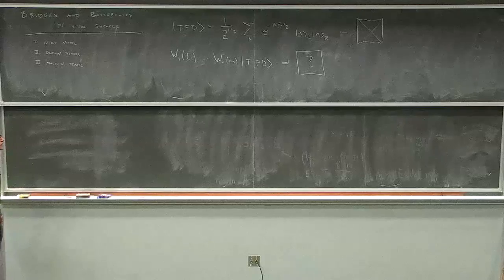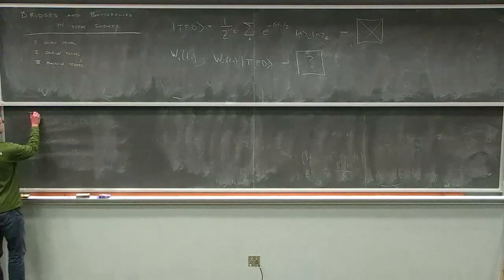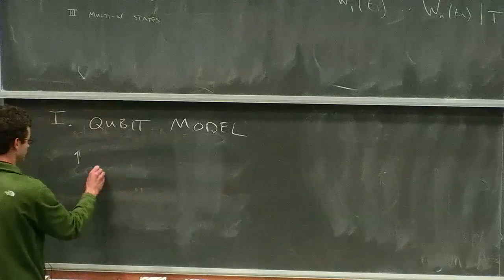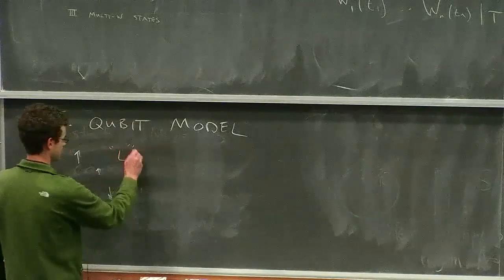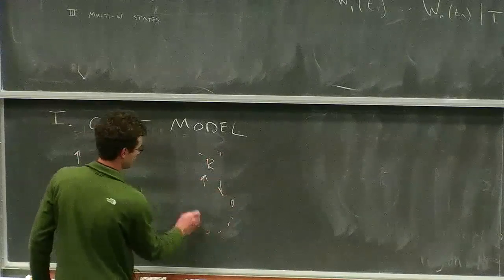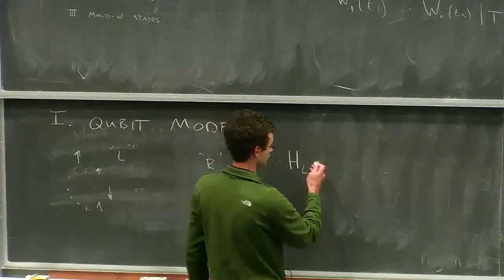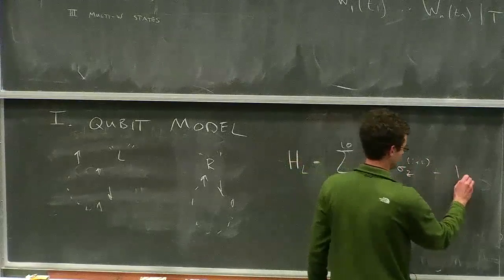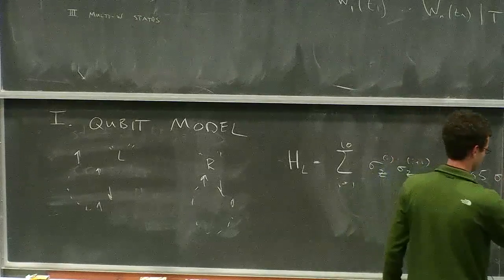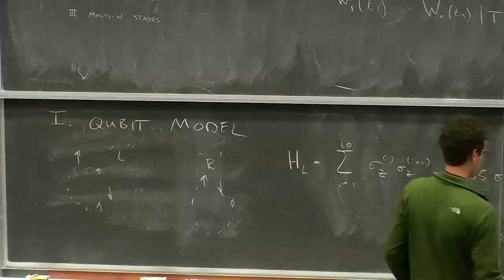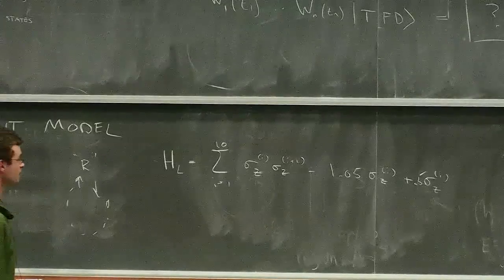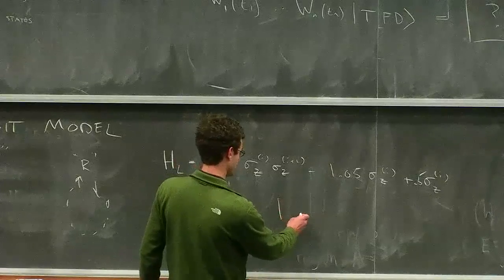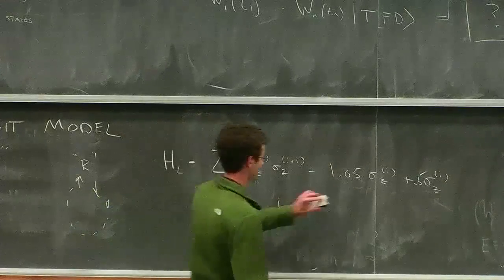I want to start off very concretely by illustrating the basic butterfly effect in a qubit model. We replace the CFTs by a system of ten spins each. The Hamiltonian for the left system is a sum over the ten spins of an Ising-like term plus some transverse and parallel magnetic fields. The coefficients are chosen to make sure the Hamiltonian isn't integrable—they were taken from a paper by Matt Hastings and collaborators.